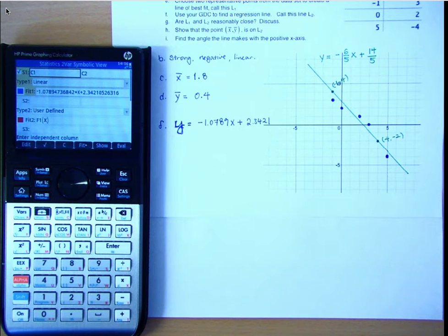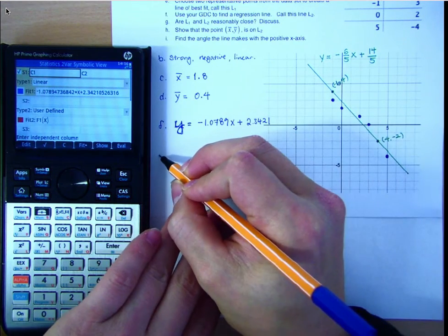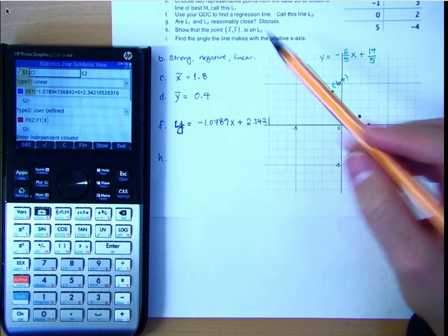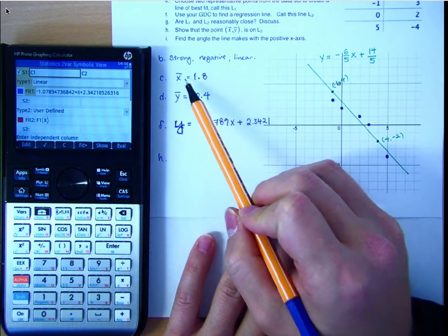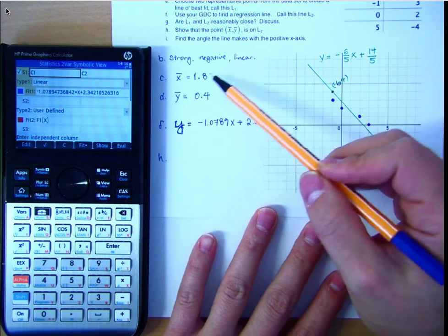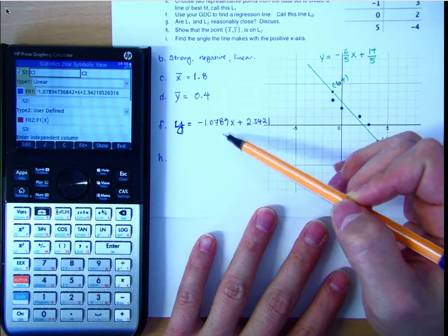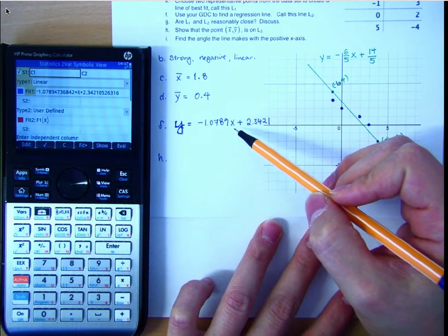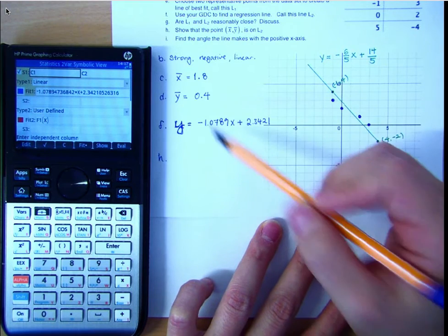Let's now do part H and show that the means exist on L2. So, how would I show the point x bar comma y bar is on L2? So, I have x bar here and y bar here. And if I wanted to show that the point is on L2, then maybe I can substitute 1.8 in x and see if my y value is close to 0.4. Okay.